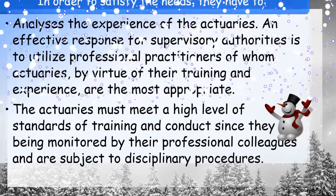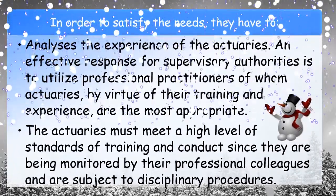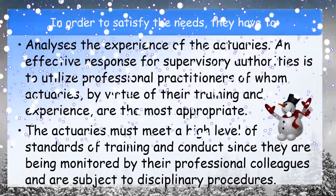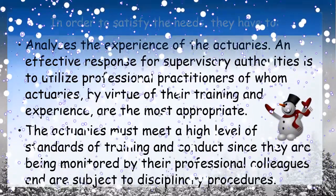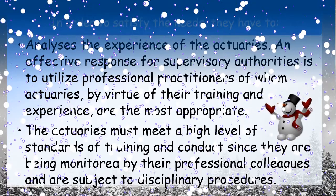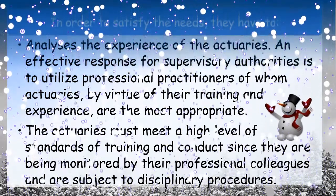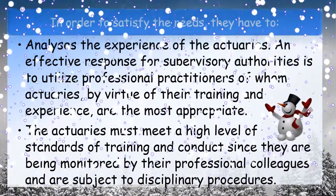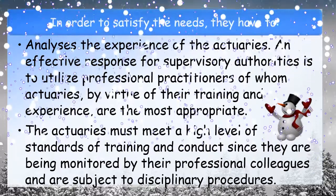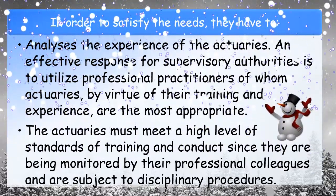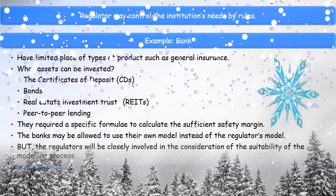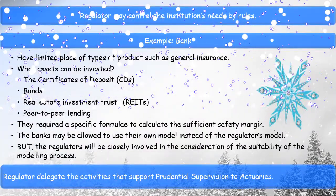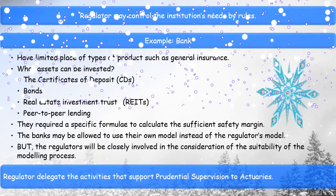In order to satisfy these needs, they have to analyse the experience of the actuaries as an effective response for supervisory authorities, utilizing professional practitioners — of whom actuaries, by virtue of their training and experience, are the most appropriate. The actuaries must meet a high level of standards of training and conduct, since they are monitored by their professional colleagues and are subject to disciplinary procedures. The regulator may control the institution's needs by rules. For example, the bank has a limited range of types of products such as general insurance.